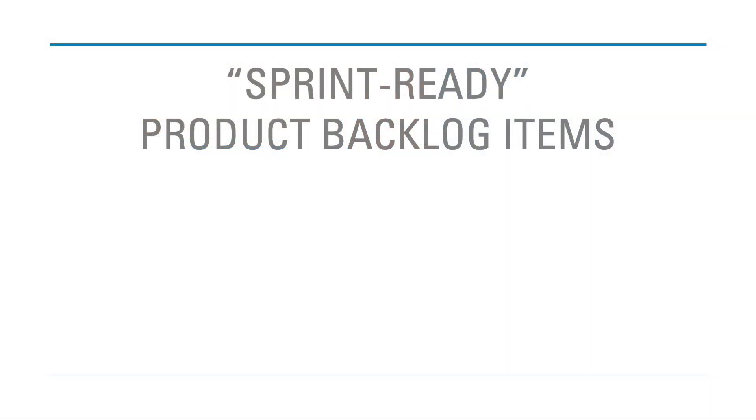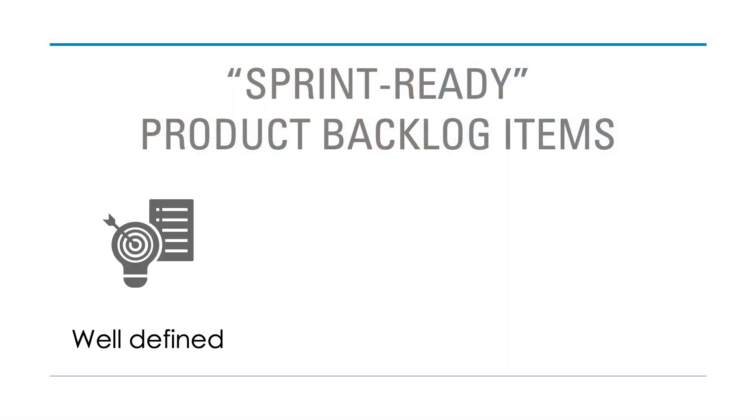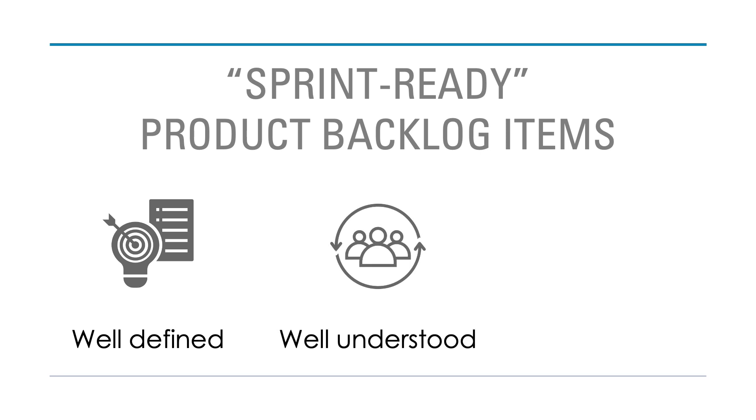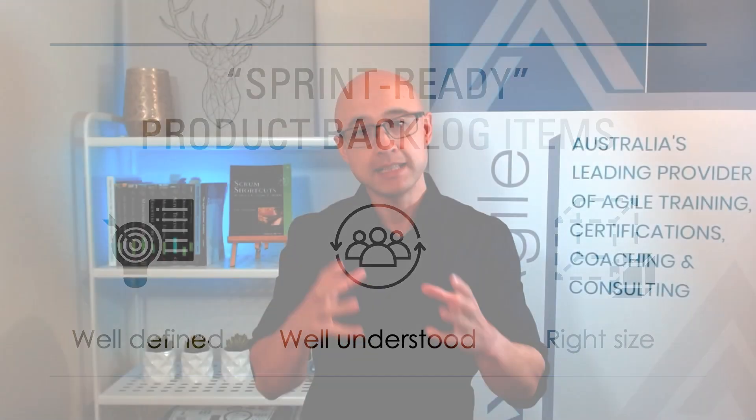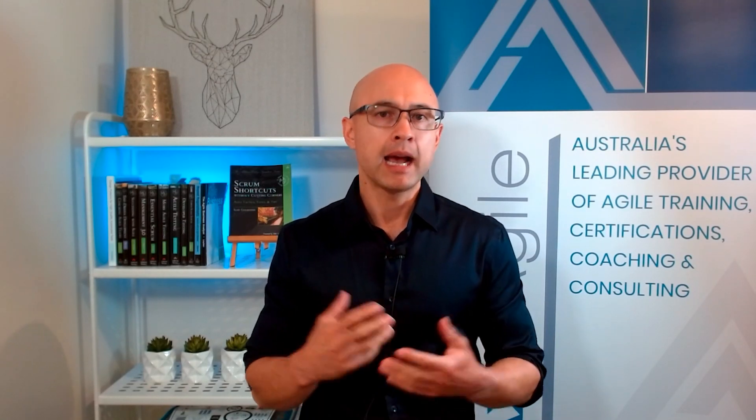They should be what we call sprint ready. Sprint-ready product backlog items are firstly well defined, secondly well understood, and thirdly of the right size — they can actually be done within your sprint cycle. If you're not familiar with what sprint ready means or refining the product backlog, go check out this video — it will help you structure your product backlog.